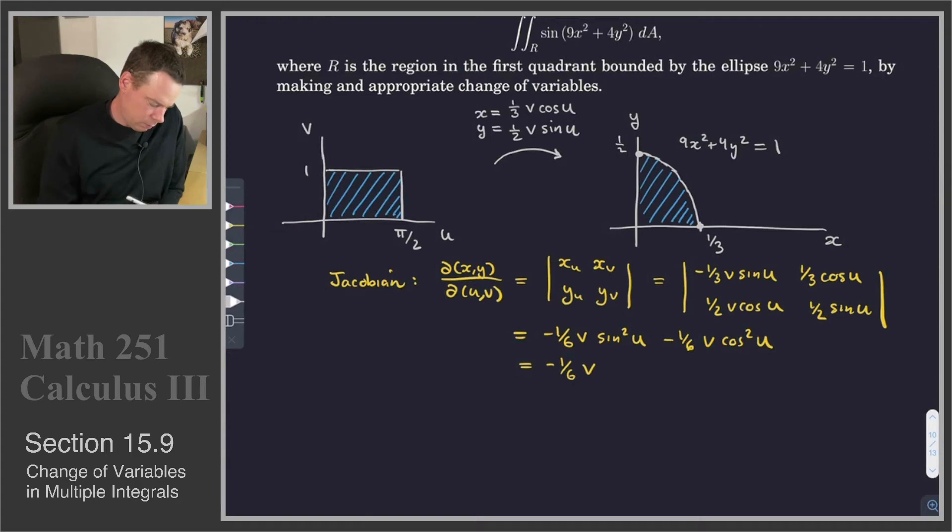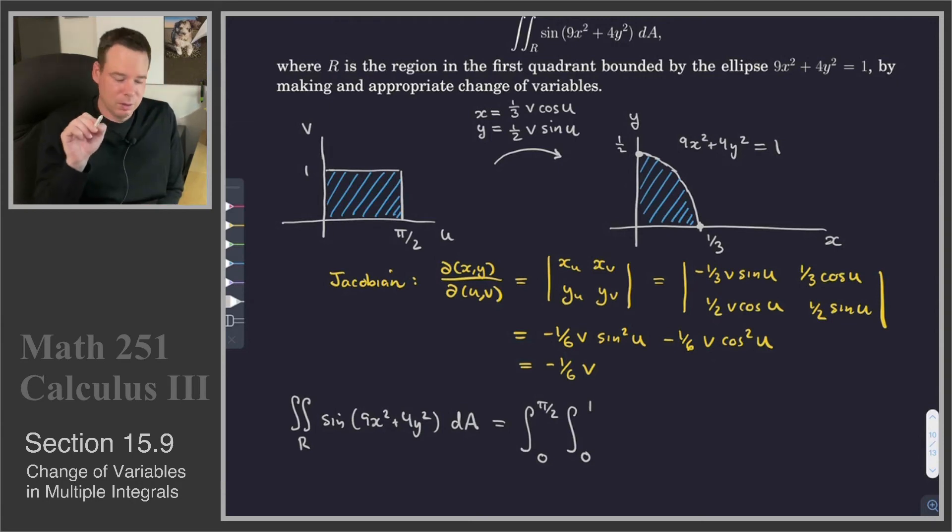Alright, now we're ready to write down the integral. The integral over the region R of sin(9x² + 4y²) dA becomes the integral where u goes from 0 to π/2, v goes from 0 to 1 of sin(9x² + 4y²). I know it's very tempting to write 1 in there, but it's not 1. 1 is only the value when we're on that outer boundary of the ellipse. We're supposed to be integrating over all points inside the ellipse.